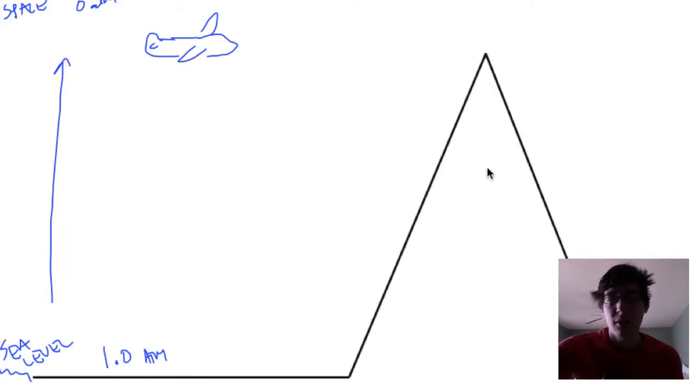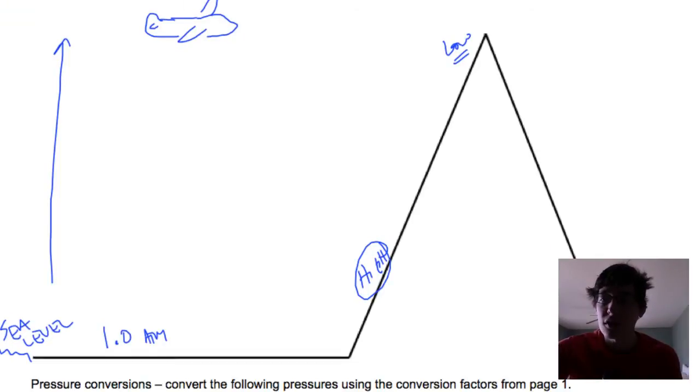Same thing if you see guys climbing Mount Everest, they wear those oxygen masks. That's because there's very low pressure up here at the top of the mountain. And there's high pressure down here at the bottom. So relative to different altitudes, pressure can change.